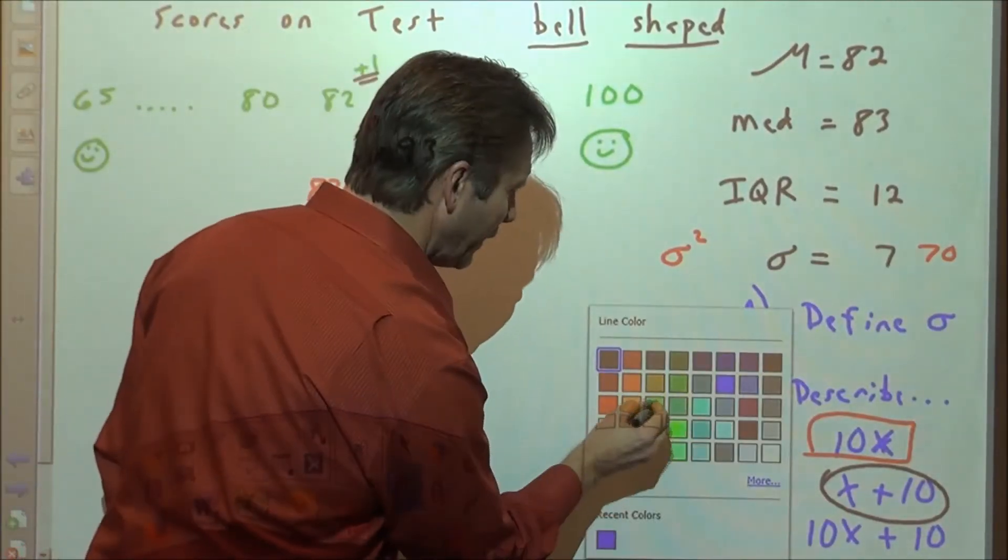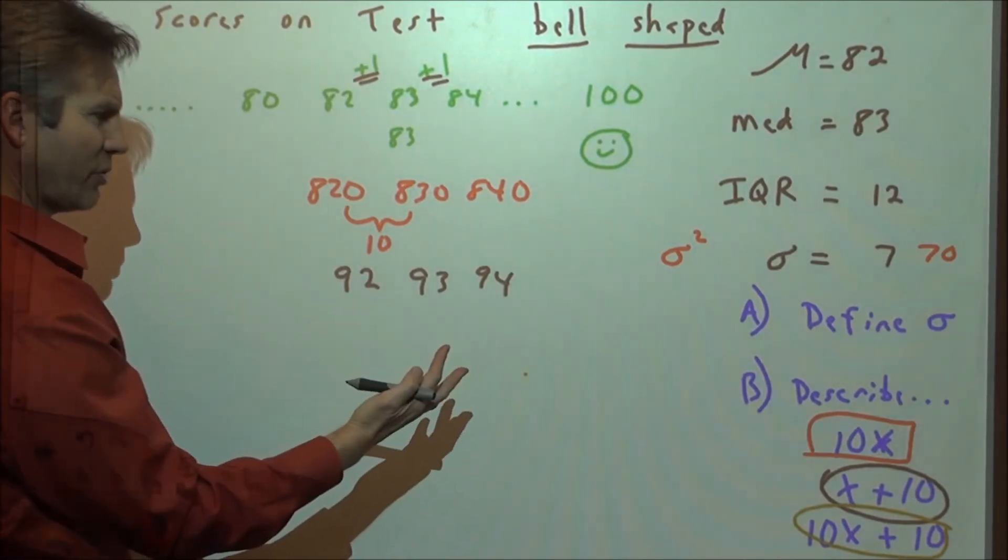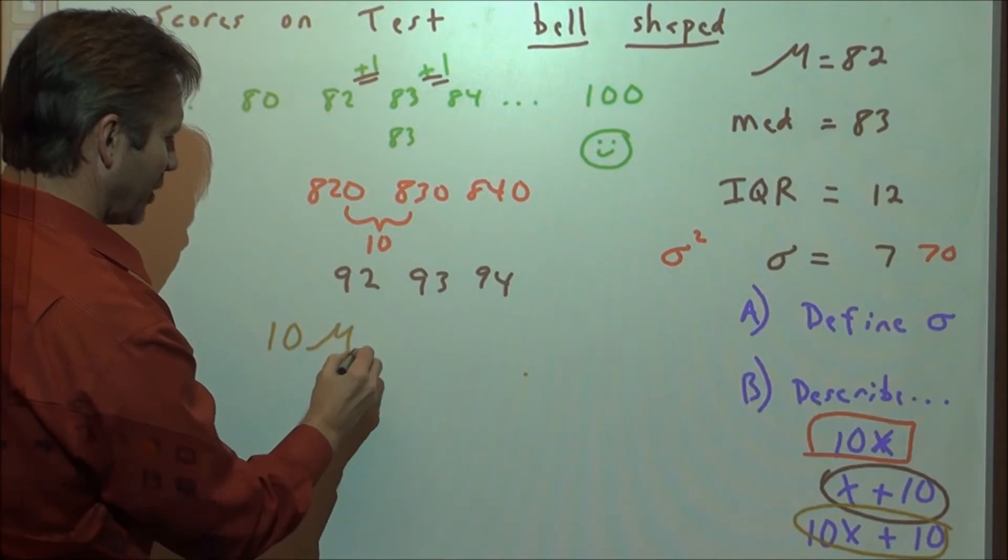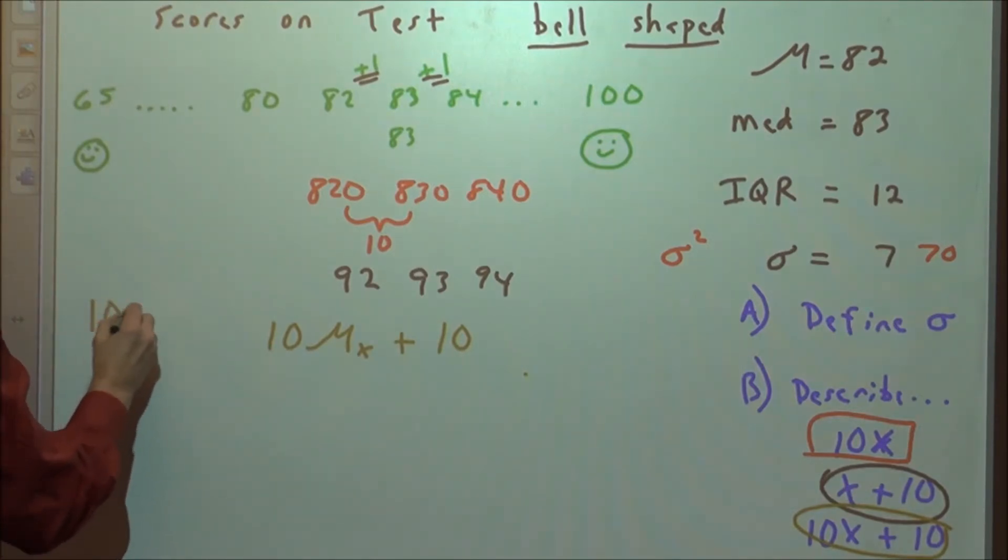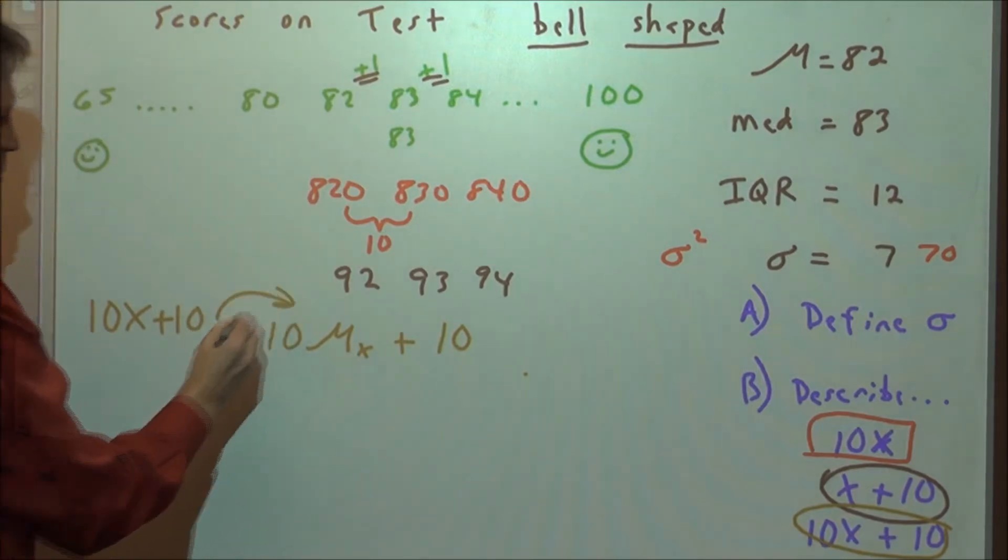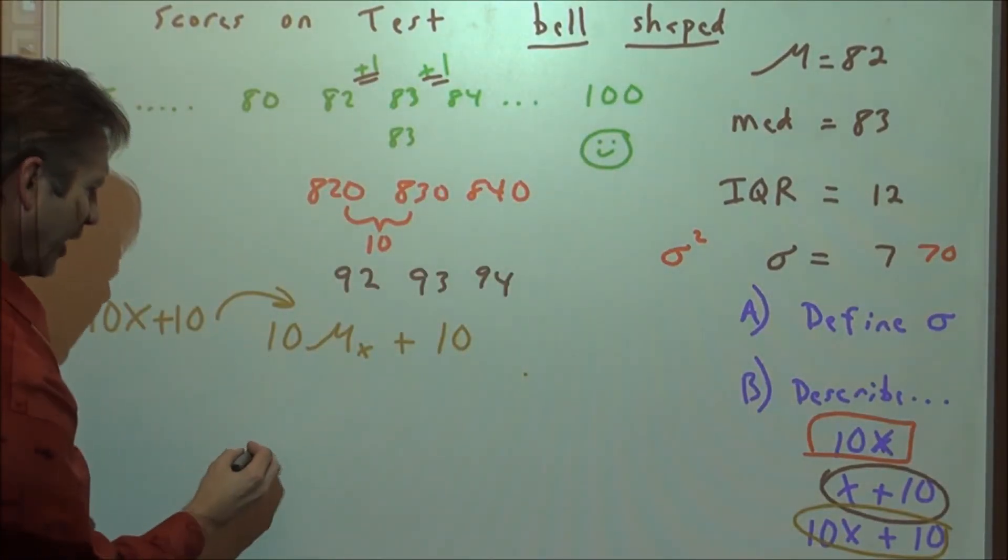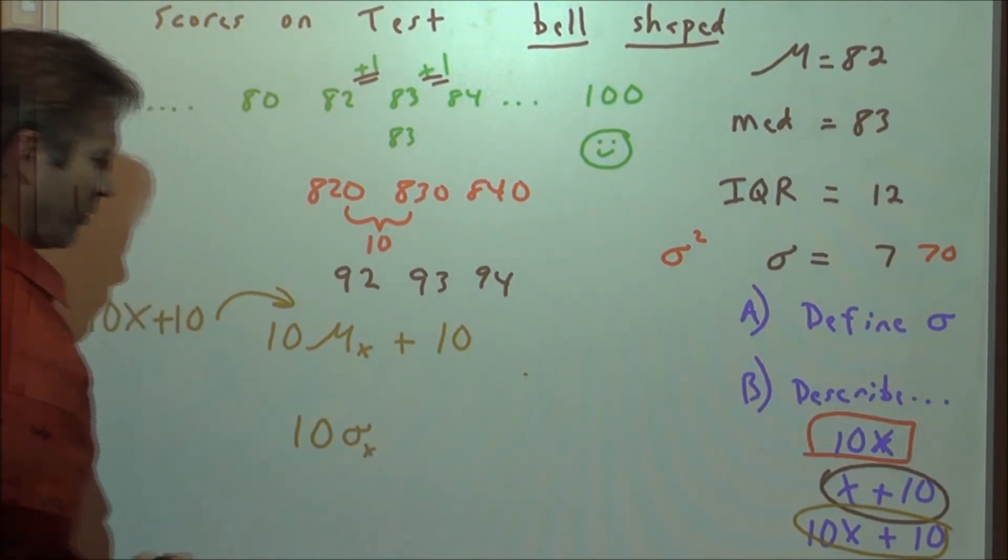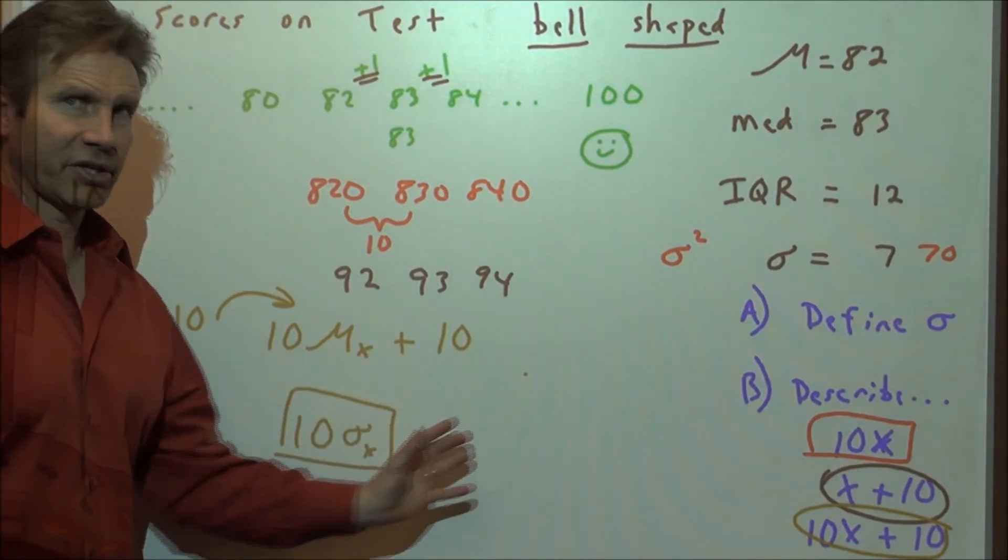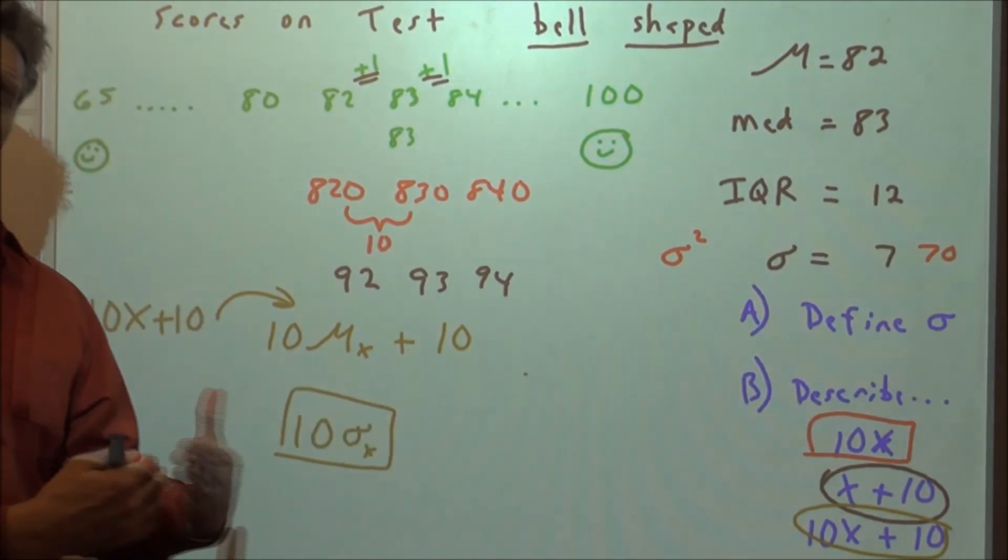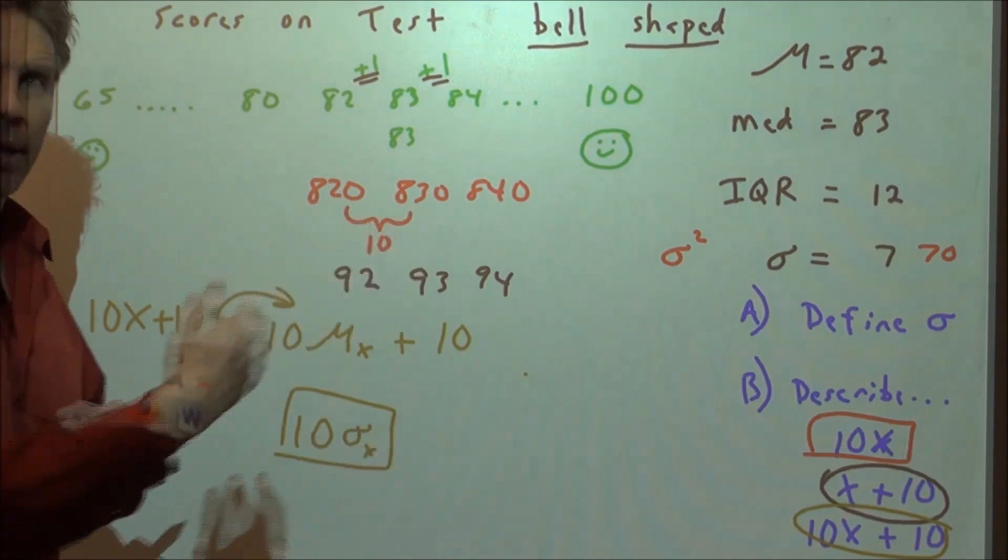But if instead we did both, we multiplied by 10, and then we added 10, the new measures of center would be 10 times as much as the old mean, and then you would add 10 to that, so that would give you the new mean of the random variable, 10x plus 10. But if instead you were talking about standard deviation, as far as its standard deviation would go, it would only be 10 times as much as the old standard deviation. Only the multiplier can change measures of spread. Those are the big ideas when it comes to the initial discussion of univariate data, one variable at a time, and when we have to compare two different populations.